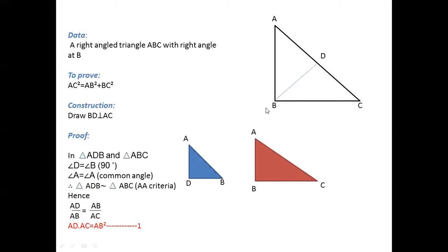Consider triangle ADB and triangle ABC. In these triangles, angle D equals angle B which is 90 degrees, and angle A is common. Hence, angle A equals angle A. So it is the AA criteria, meaning when two angles are equal, the two triangles are similar.